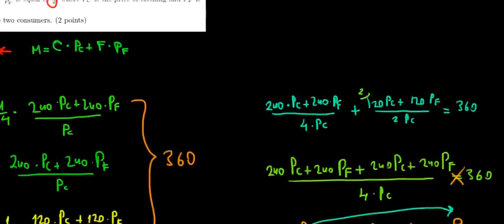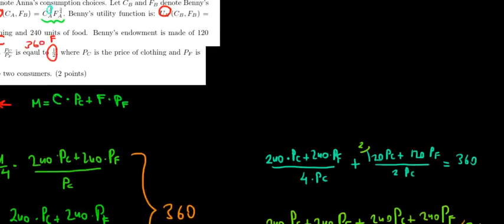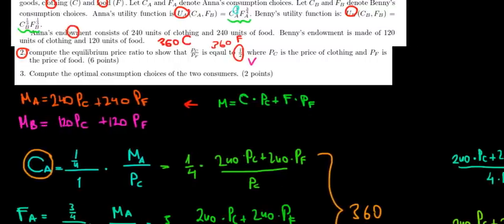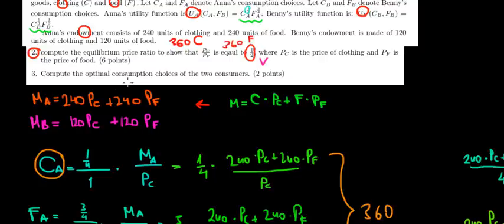Let's see if it corresponds to the answer key, because they said find out the ratio of price of clothing divided by price of food and show that it's equal to 1 over 2. So we did, we got it. We are done with this question. In the next one, we're going to look at question 3, what's going to be the optimal consumption of the two consumers?